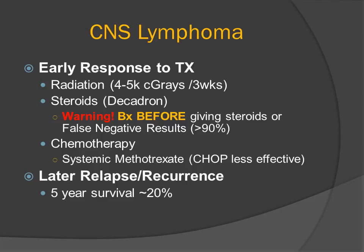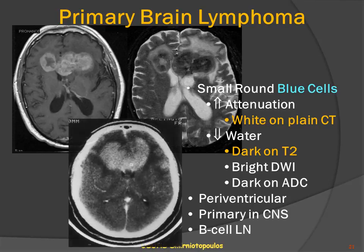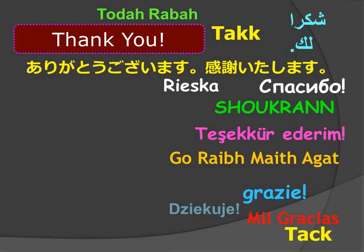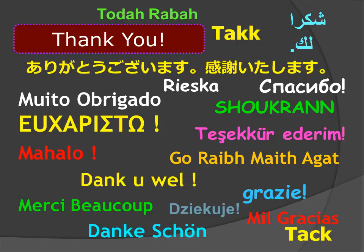Unfortunately, the five-year survival for these patients is only approximately 20%. So to summarize: primary CNS lymphoma is periventricular, involves the corpus callosum, produces a butterfly lesion composed of small, round blue cells, shows increased attenuation on non-contrast CT, low signal on T2-weighted MR, low signal on FLAIR MR, and bright signal on diffusion-weighted imaging. And this has been another MedPix video — thank you for your kind attention.